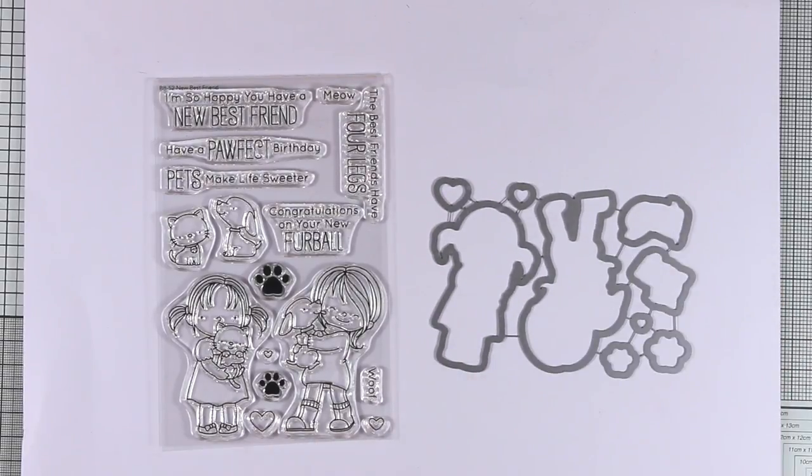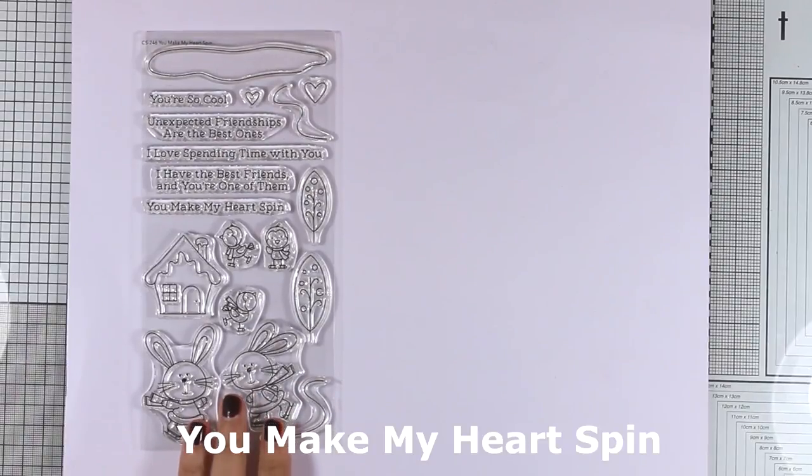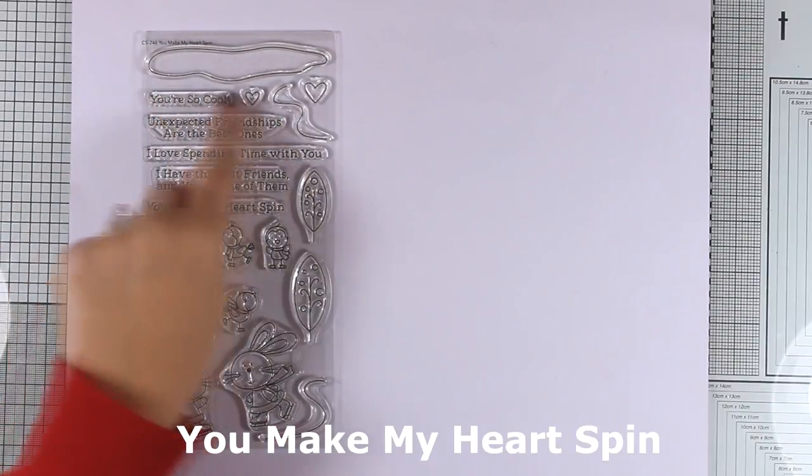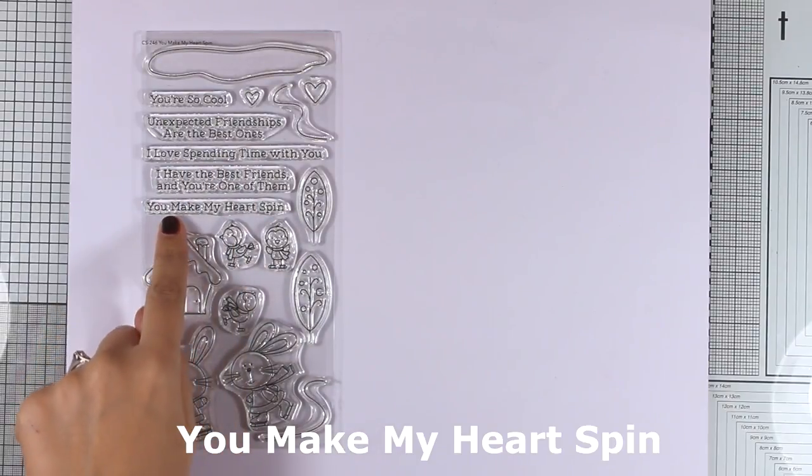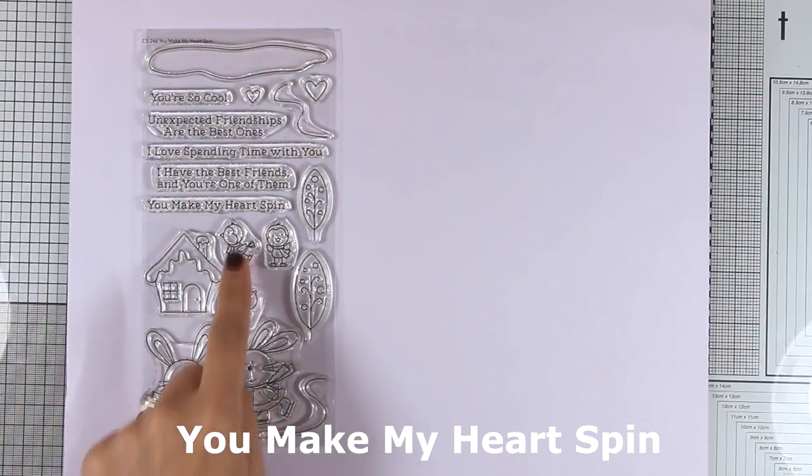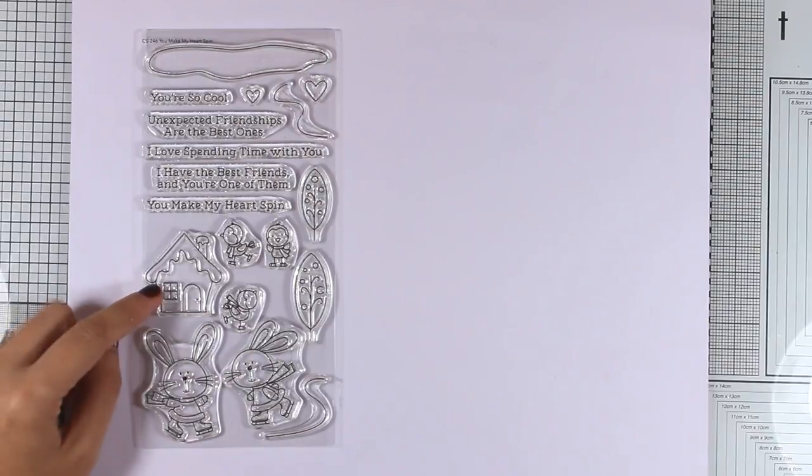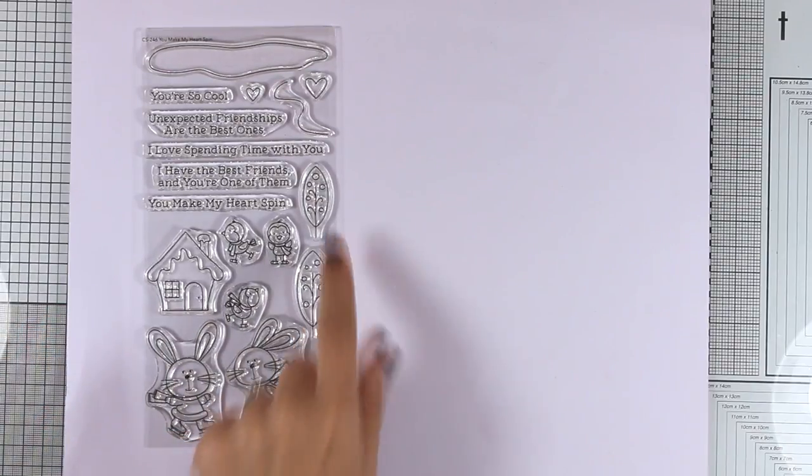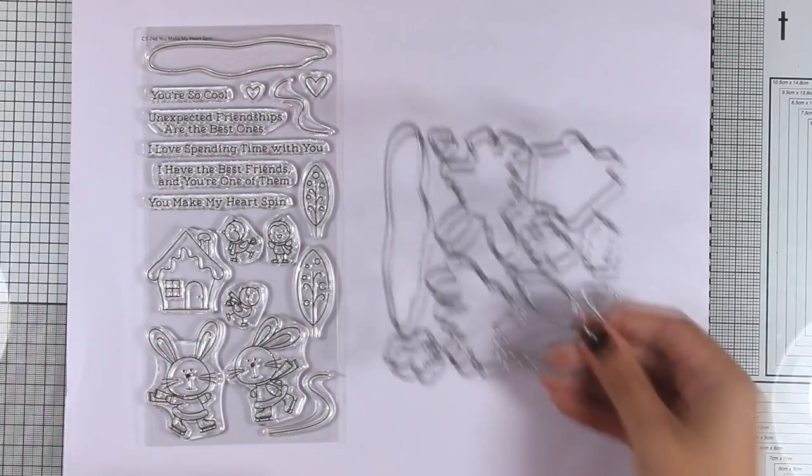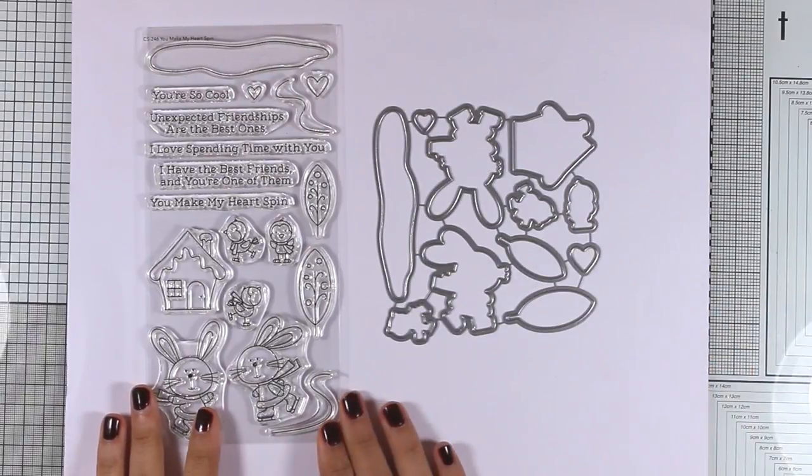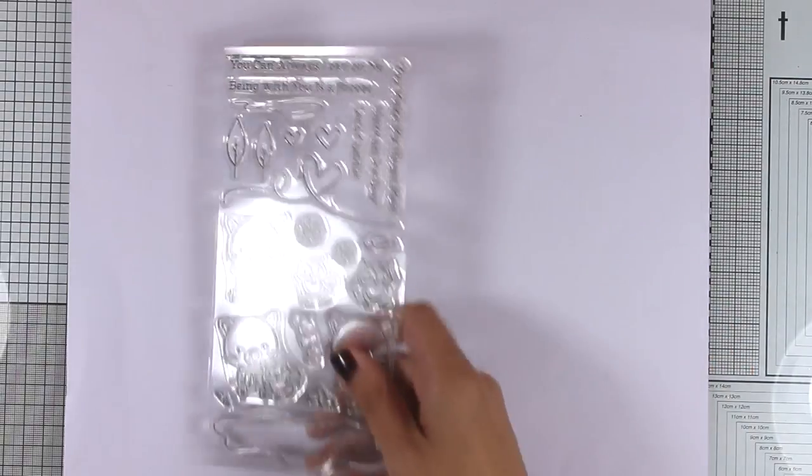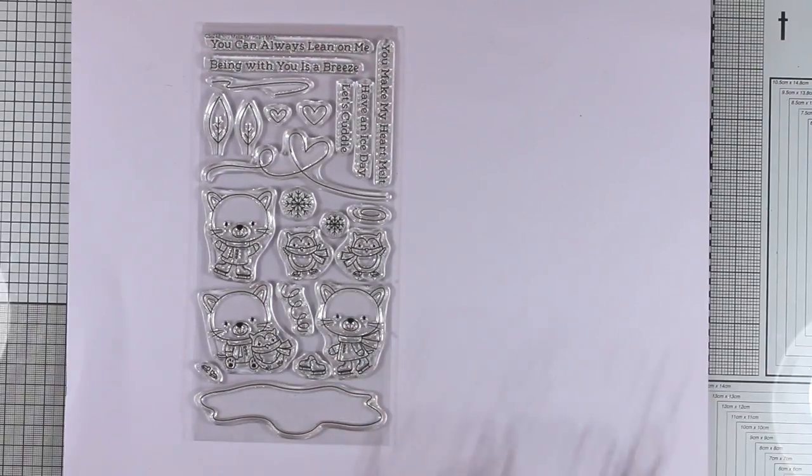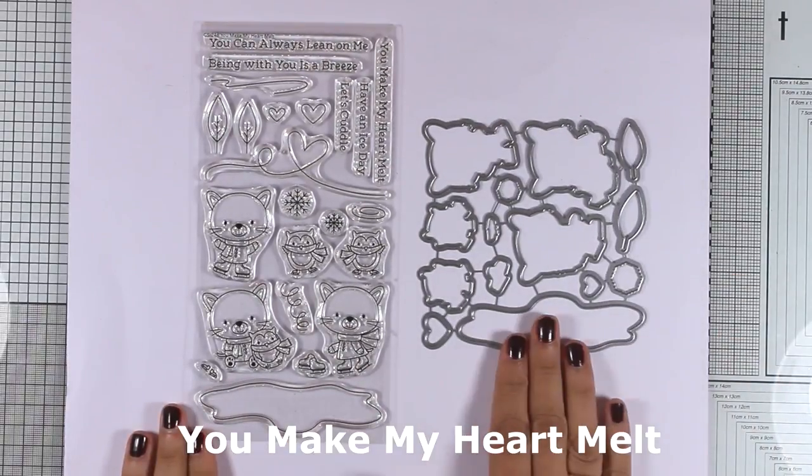Here is a stamp set perfect for little scenes. It's called You Make My Heart Spin. You get an ice rink along with sentiments for your scene, lots of birdies, a couple of bunnies, a house, and little trees to create beautiful scenes. There are also matching dies, just like always.